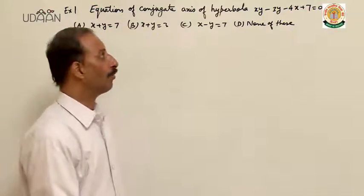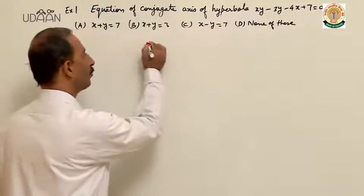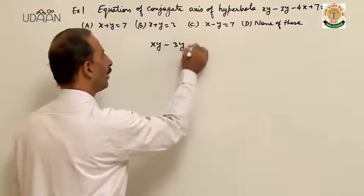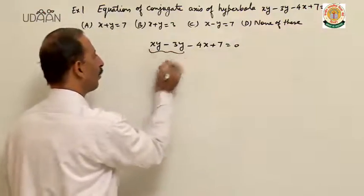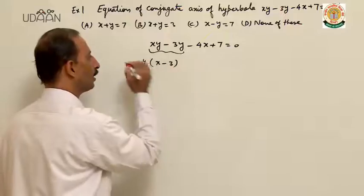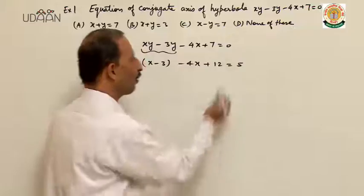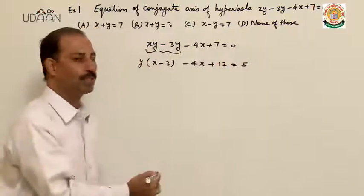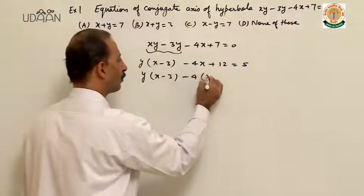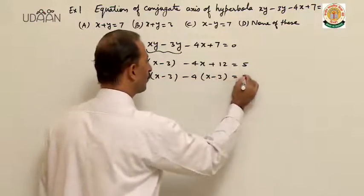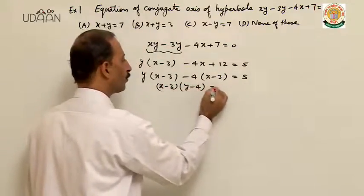First of all, the equation of the hyperbola you have to convert into standard form. Equation is given: xy minus 3y minus 4x plus 7 equal to 0. If you take y common from here, you will get x minus 3. Here I am writing 4x plus 12 is equal to 5 — I have added 5 both sides. Here you can take minus 4 common, it becomes x minus 3. Further take x minus 3 common: x minus 3 into y minus 4 is equal to 5.